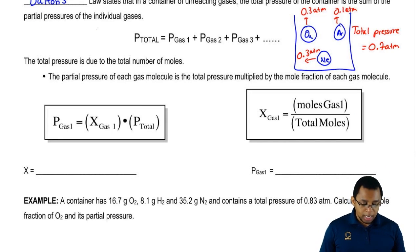We're going to say the partial pressure of each gas molecule is the total pressure multiplied by the mole fraction of each gas particle or gas molecule. What the heck does that mean?